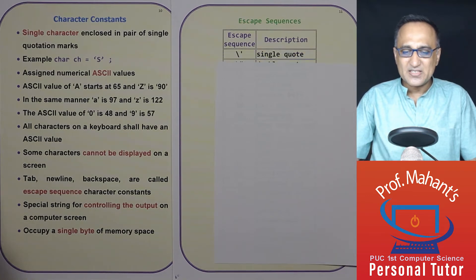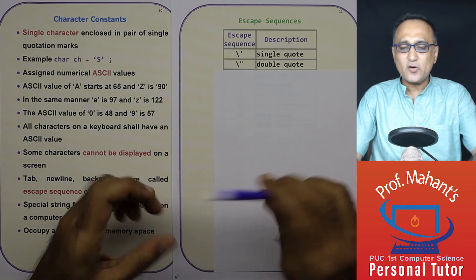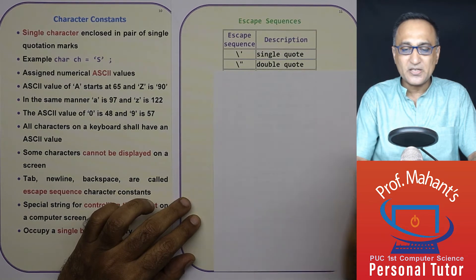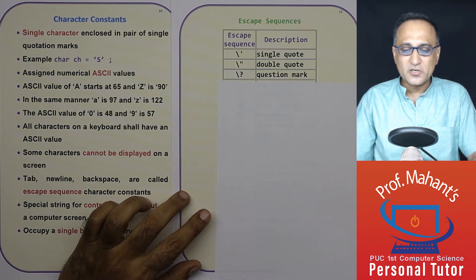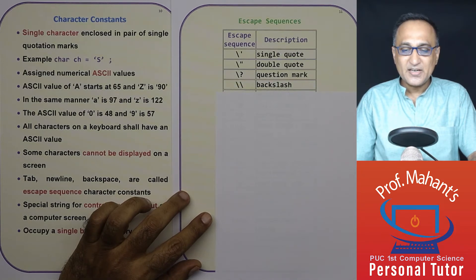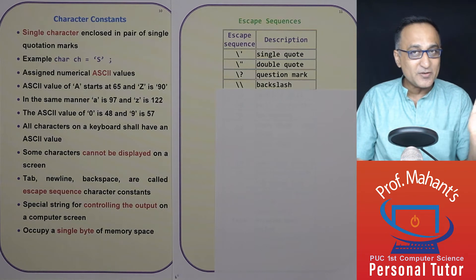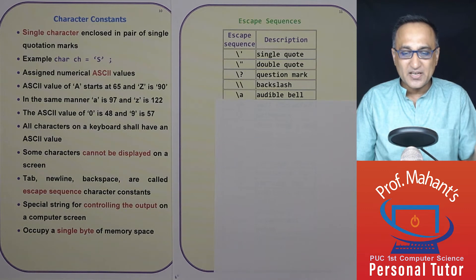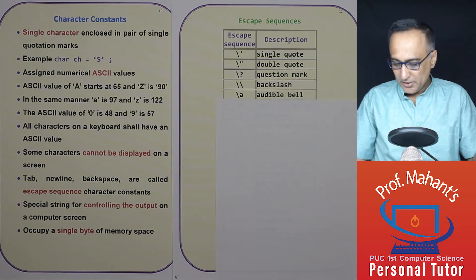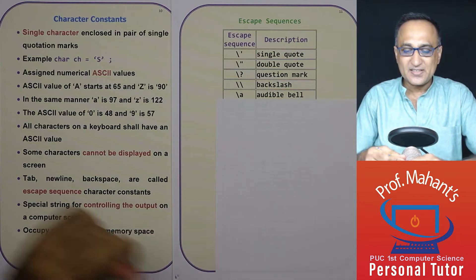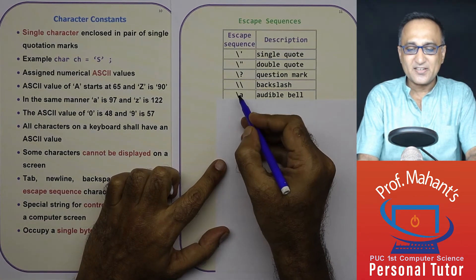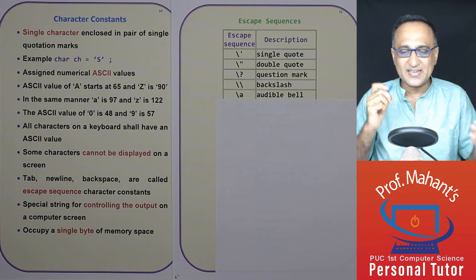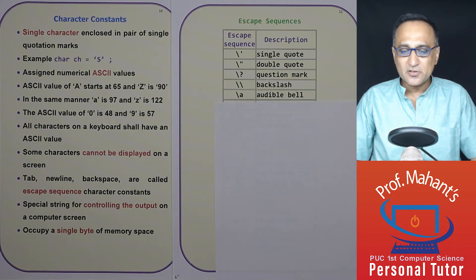Examples of escape sequence are: if I want to display a single quote, I have to precede it with a backslash. If I have to display a double quote, I have to precede it with a backslash. Then if I have to display a question mark, I have to precede it with a backslash. If I have to display a backslash, I have to precede it with one backslash. Then if I want to create a beeping or a bell sound, if I say backslash A, this will give you an audible bell. You need to understand that these particular characters are a single character. Although this backslash A shows us two, it is actually one single ASCII value or one single character. So these are all examples of escape sequences.